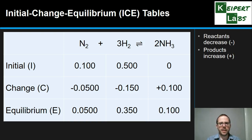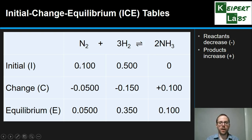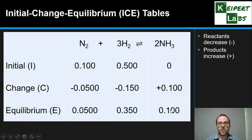In the change row, reactants decrease and products increase — the minuses and pluses are deliberate. Using the mole ratio: for every two moles of ammonia produced, only one mole of nitrogen is used. So if 0.1 mol/L of ammonia is produced, nitrogen only decreases by 0.05 mol/L. Hydrogen is consumed at three times the rate, so we multiply by three for that change value. Filling down each column gives our equilibrium concentrations, which we can then substitute into the equilibrium expression to calculate K using the correct stoichiometry.